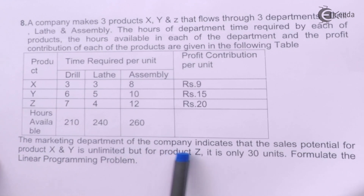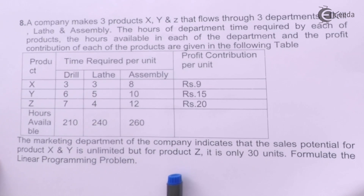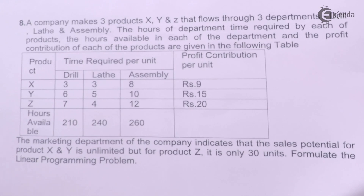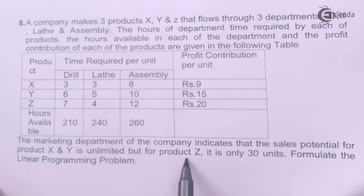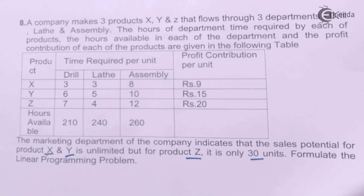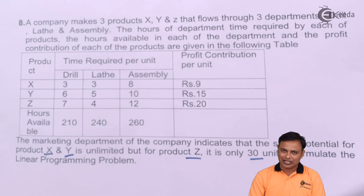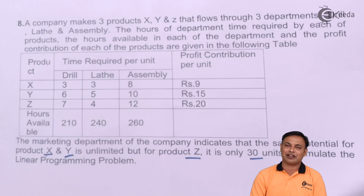The marketing department of the company indicates that the sales potential for X and Y is unlimited, but for product Z it is only 30 units. So the maximum demand for product Z is 30, but there is no such limit for X and Y. You can sell as many quantities as you can make for X and Y, but not for Z. For Z, you can sell a maximum of 30 units. As a manufacturer, I won't make more than 30 units of Z because if I make more than 30 units, the remaining units beyond 30 will remain unsold.